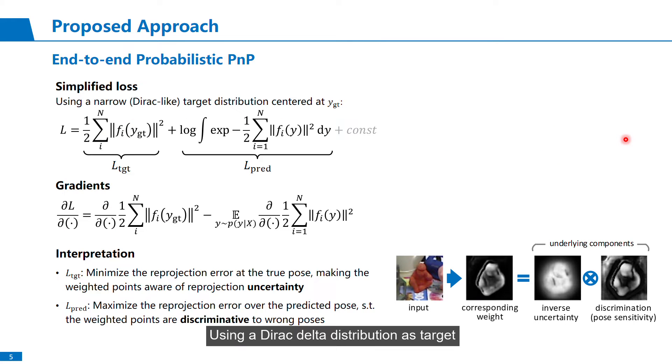Using the Dirac delta distribution as target, we can have this simplified loss function. Taking the gradients, we can see that it tries to minimize the reprojection error at the target pose, while maximizing the reprojection error over the predicted pose.